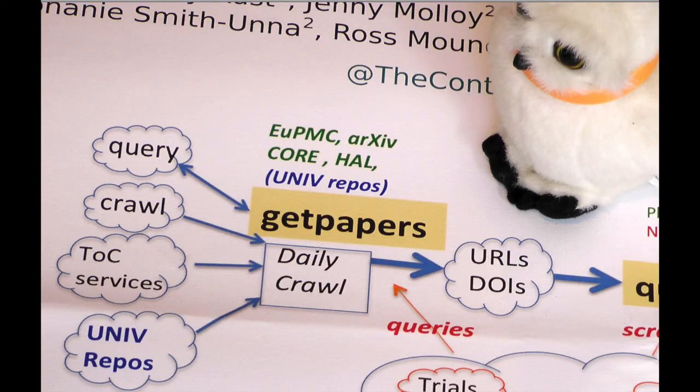There's five software modules, all of them novel. GetPaper lets you issue a query and download all the papers associated with it in one go automatically.